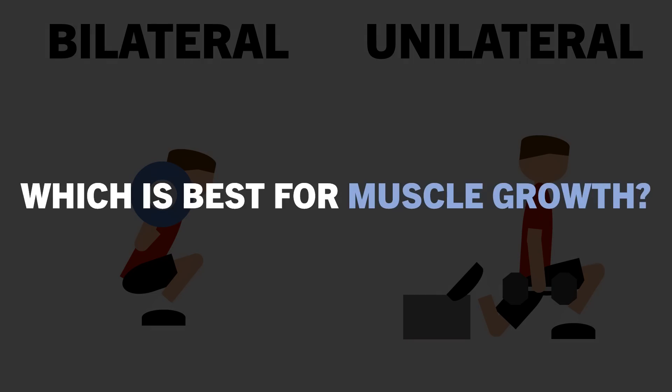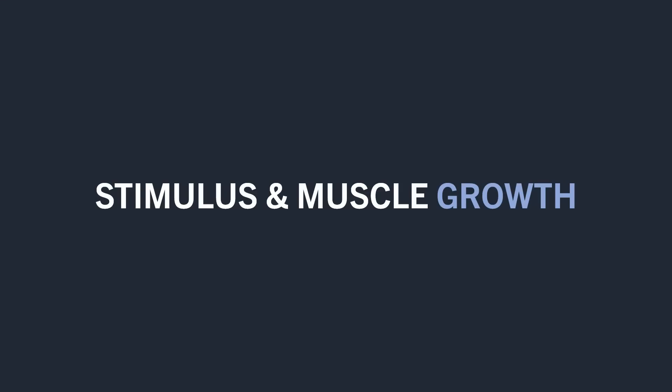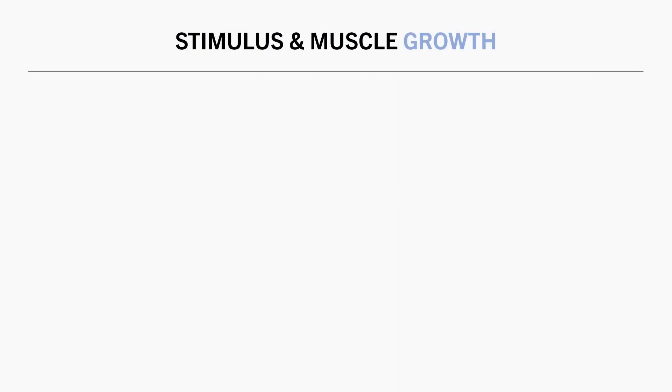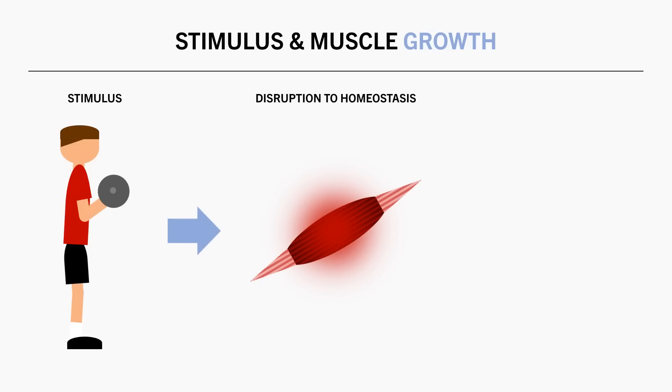To answer this question we need to understand how exactly muscle growth occurs in the first place. Essentially we provide a stimulus via resistance training, this then disrupts homeostasis to some extent.